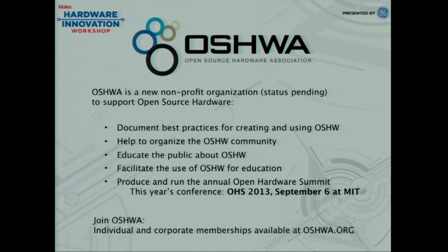I got connected to the open source hardware community and I think it's a good thing — I'd like to help it grow. So I joined OSHWA, which is a new nonprofit organization still in the forming stages with the goal of supporting open source hardware. One of the things we want to do in OSHWA is document best practices for creating and using open source hardware — guidelines about labeling your layers and being clear about what you're giving to the world. OSHWA was also created because we need an organization to actually run the annual Open Hardware Summit. This year's conference — the fourth Open Hardware Summit — will be September 6th at MIT. Mark your calendars. If you'd like to join OSHWA, we are accepting individual and corporate memberships.